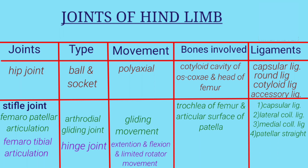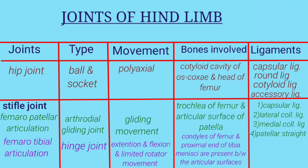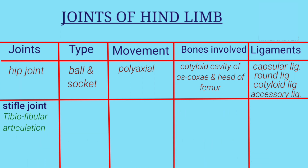In femorotibial articulation, the bones involved are condyles of femur and proximal end of the tibia; menisci are present between the articular surfaces. The ligaments are capsular ligament, lateral ligament, medial collateral ligament, and cruciate ligament. Third is tibiofibular articulation.